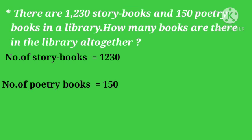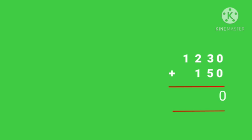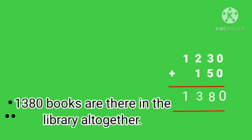Number of story books is equal to 1230. Number of poetry books is equal to 150. So add 1230 plus 150. From the ones column: 0 plus 0 is 0, 3 plus 5 is 8, 2 plus 1 is 3, and 1 remains. So the answer is 1380. Therefore 1380 books are there in the library altogether.